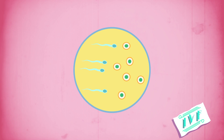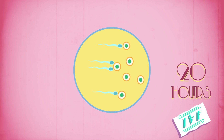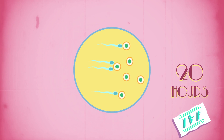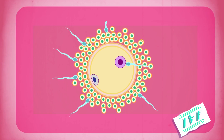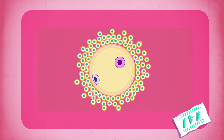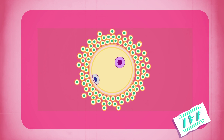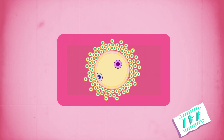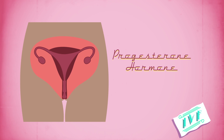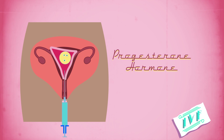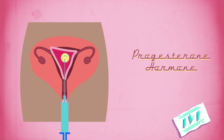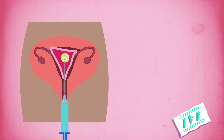The egg and sperm are then mixed together in a petri dish and left to fertilize for about 20 hours. If fertilization happens, the embryos are kept in a warm place set at human body temperature to replicate the mother's uterus. They stay here for up to six days to ensure they are starting to develop into embryos. The woman is given progesterone to make sure her uterus is ready, and the best two or three embryos are then transferred back into the woman's uterus using a long plastic tube called a catheter.